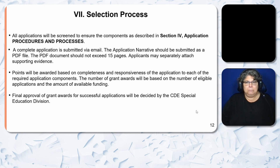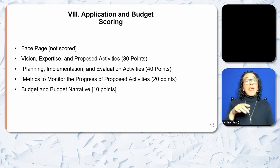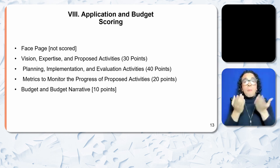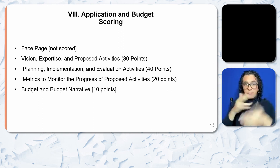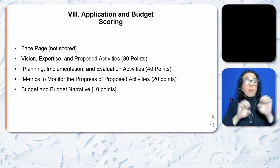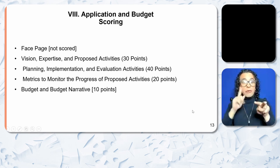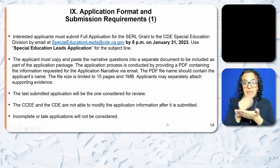Section 8, Application and Budget Scoring: A. Face page — not scored. B. Vision, Expertise, and Proposed Activities — 30 points. C. Planning, Implementation, and Evaluation Activities — 40 points. D. Metrics to monitor the progress of proposed activities — 20 points. E. Budget and Budget Narrative — 10 points.